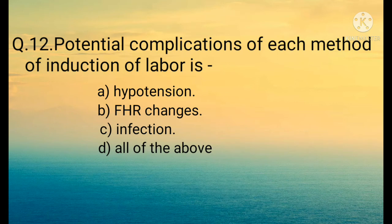Question number twelve: Potential complications of each method of induction of labor — Option A: Hypotension, Option B: FHR (fetal heart rate) changes, Option C: Infection, Option D: All of the above. The correct option is Option D: All of the above.